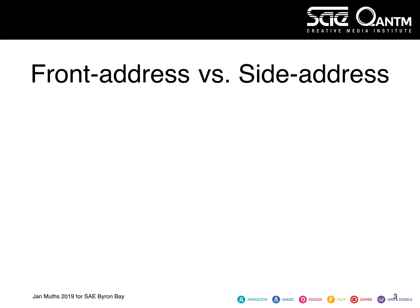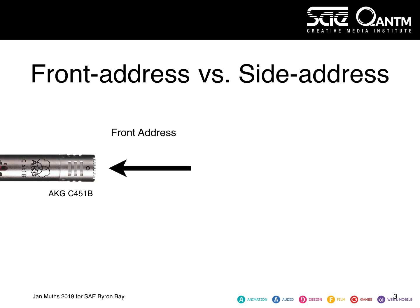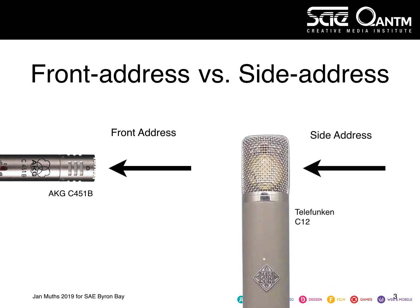Microphones can be addressed either from the front or the side. Most pencil condensers are front address microphones — that means you speak directly into them. If you look at a side address microphone, such as the Telefunken C12 on the right hand side, you may see that there is a diaphragm inside the grille that stands upright. Therefore, it's addressed from the side at a 90-degree angle. This is typical for many studio vocal microphones, such as large diaphragm condensers.